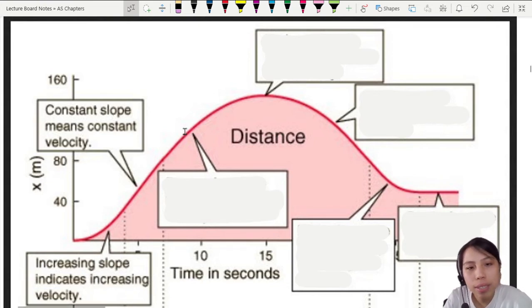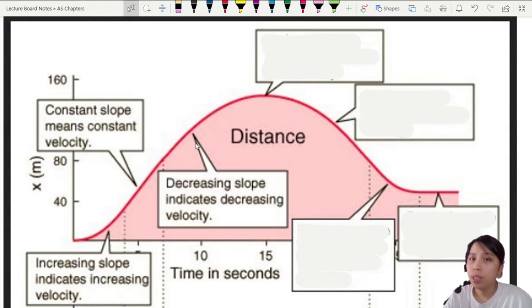Then part three, look at this, it's kind of getting flatter. The slope is decreasing. So what does that mean for velocity? You can say decreasing slope indicates decreasing velocity. It's moving slower and slower, but the distance is still increasing. You're still moving, just decreasing speed.